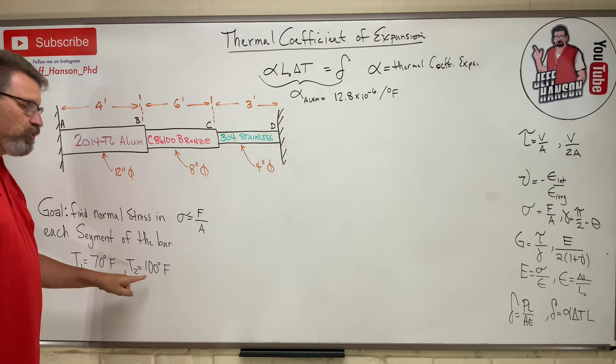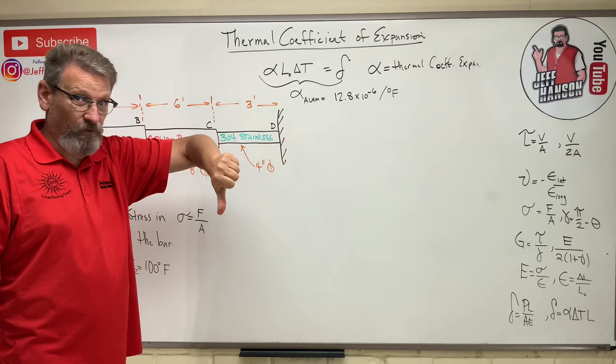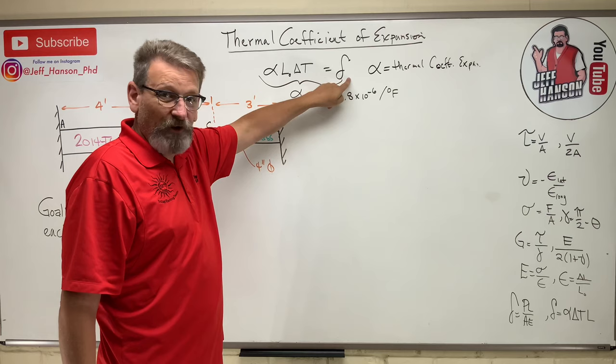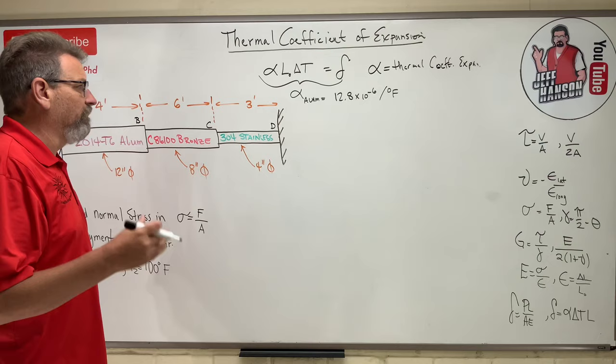The temperature goes from 70 to 100°F, so the temperature is going up. What happens if the temperature goes down? Well, instead of the bar getting longer, the bar gets shorter. If delta T is negative, then this becomes negative, and so your delta for the growth is negative.